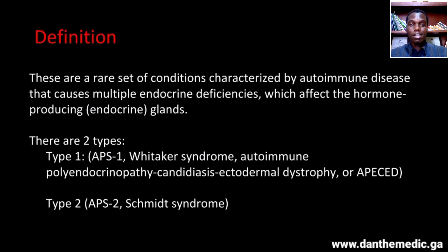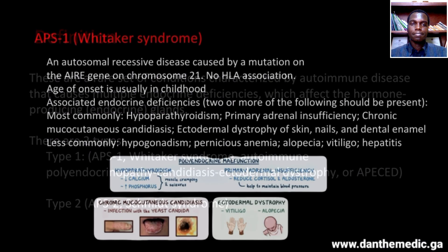There are two types. Type 1, also known as Whittaker syndrome or autoimmune polyendocrinopathy candidiasis ectodermal dystrophy, and type 2, also known as Schmitt syndrome.